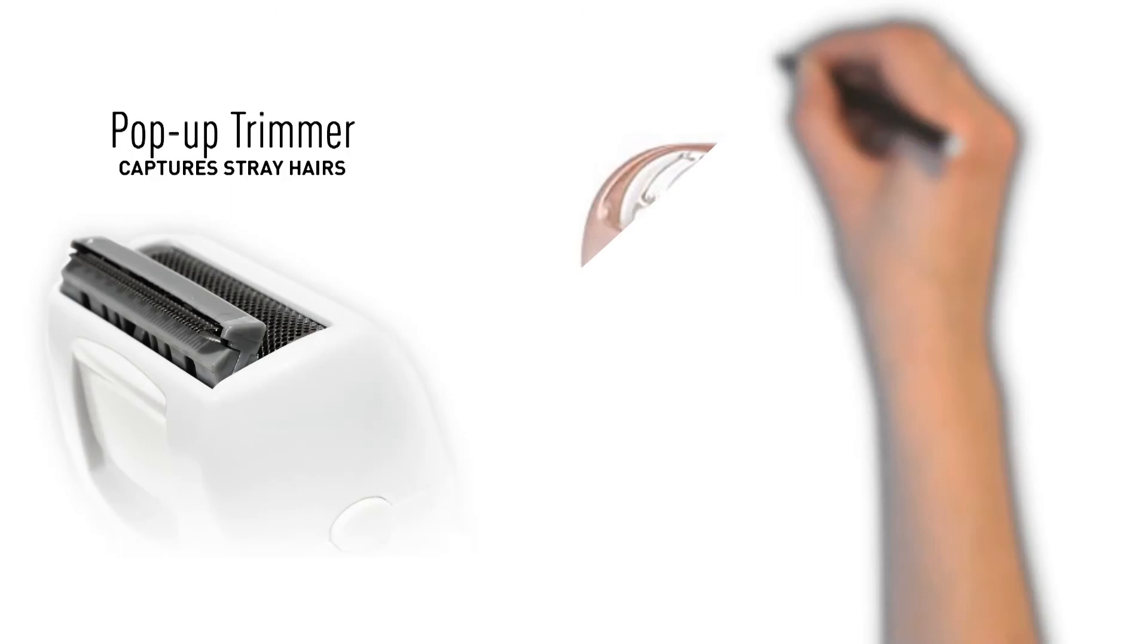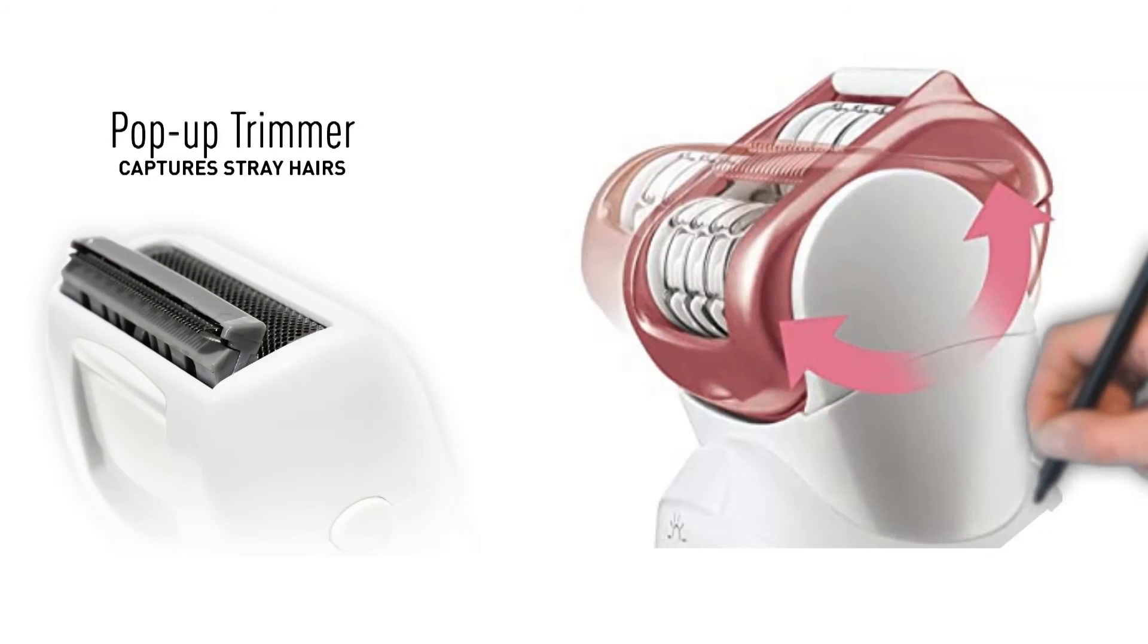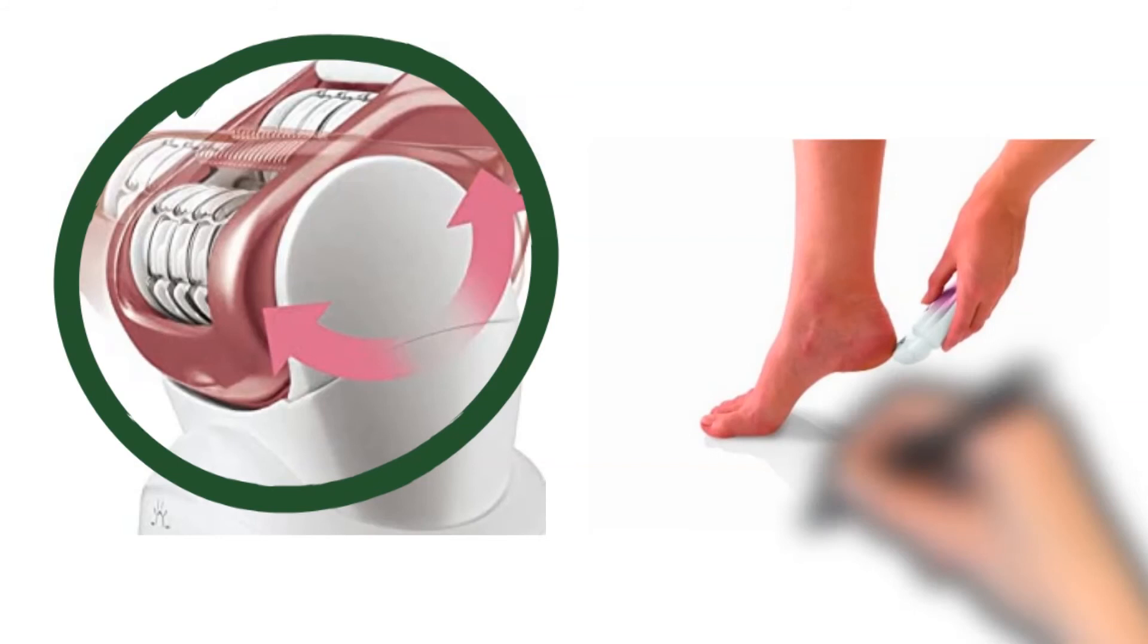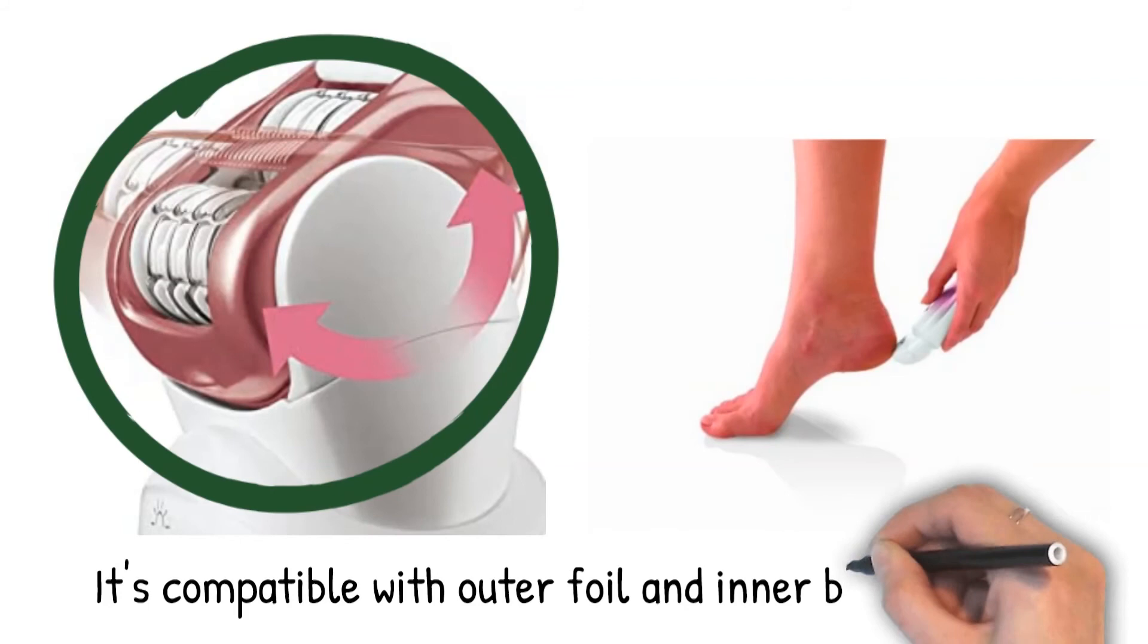Wide, dual disc epilation head conforms to individual body contours and is ideal for legs and arms. The gentle epilator head is aimed for hair removal from sensitive areas. The pedicure buffer attachment gently removes dry, rough skin to beautify feet. It's compatible with outer foil and inner blade combo.